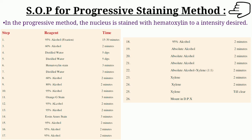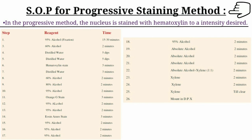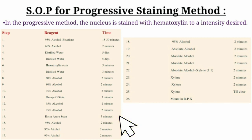SOP for progressive staining method: In the progressive method, the nucleus is stained with hematoxylin to the desired intensity. Both progressive and regressive methods require multiple coupling jars filled with reagents. There are 26 steps in progressive staining that must be followed step by step.